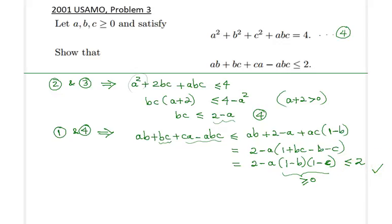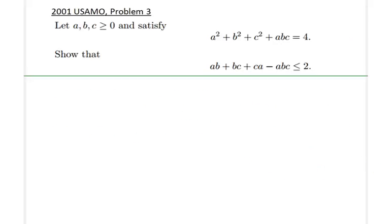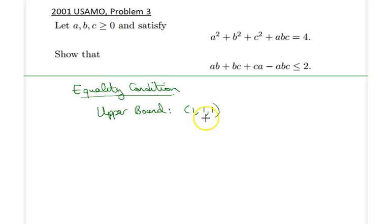Now finally it would be nice to think about the equality conditions here for the upper bound and the lower bound. So for the upper bound first, it turns out, and it's not too difficult to see, that abc being (1, 1, 1) satisfies the upper bound obviously, so if you plug in (1, 1, 1), you will get a 2 here.